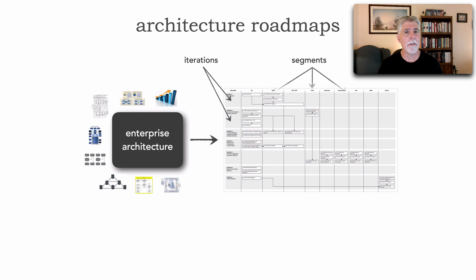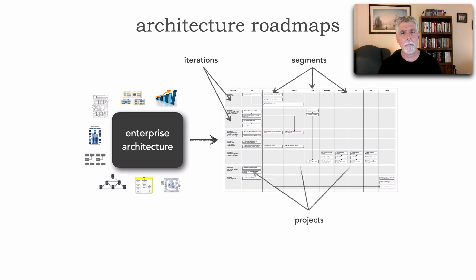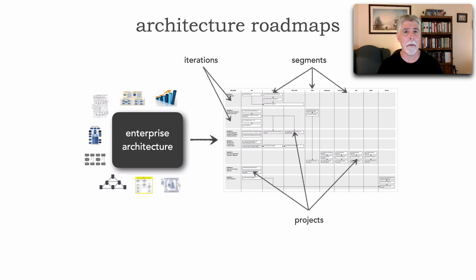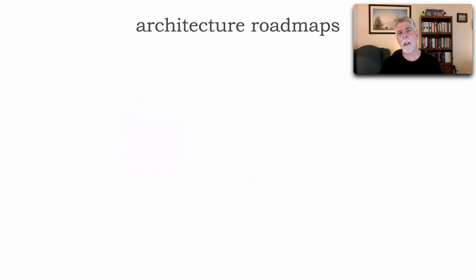The roadmap consists of various iterations to transform the enterprise, various segments — these could be applications, systems, divisions, or departments depending on the scope of the initiative — and finally, within the intersection of those are the various projects that usually get handed off to application architects or development teams to figure out the details of how something is going to be implemented.